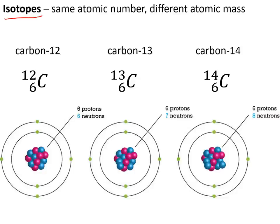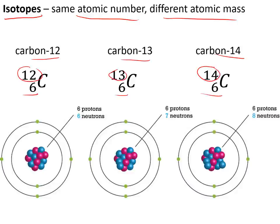Isotopes are different versions of an element with the same atomic number but a different atomic mass — that is the same number of protons but different numbers of neutrons. Carbon has 3 isotopes: carbon-12, carbon-13, and carbon-14. They've all got the same atomic number, meaning 6 protons and 6 electrons, but different neutrons: carbon-12 has 6 neutrons, carbon-13 has 7 neutrons, and carbon-14 has 8 neutrons.